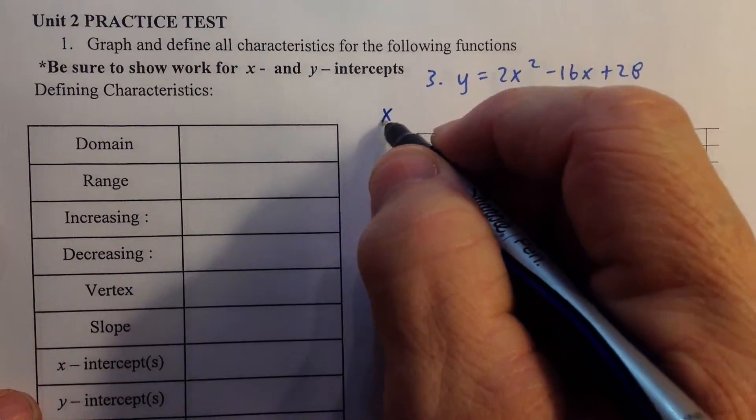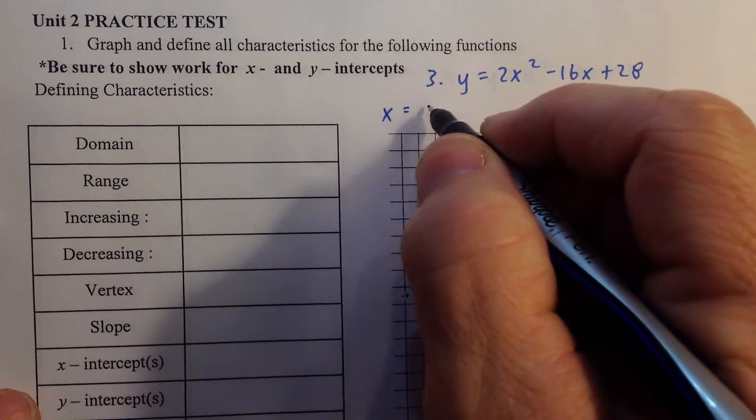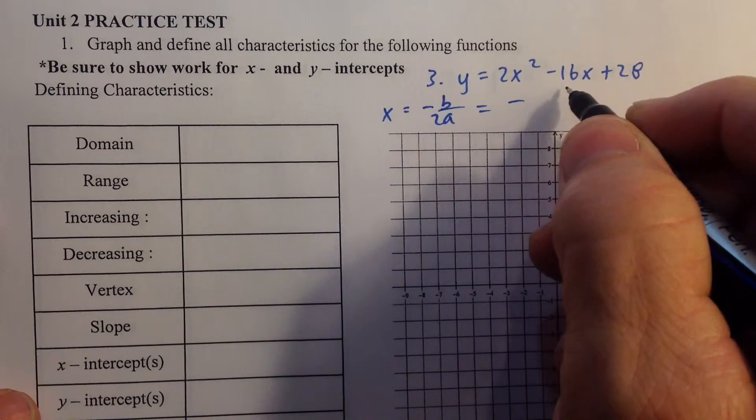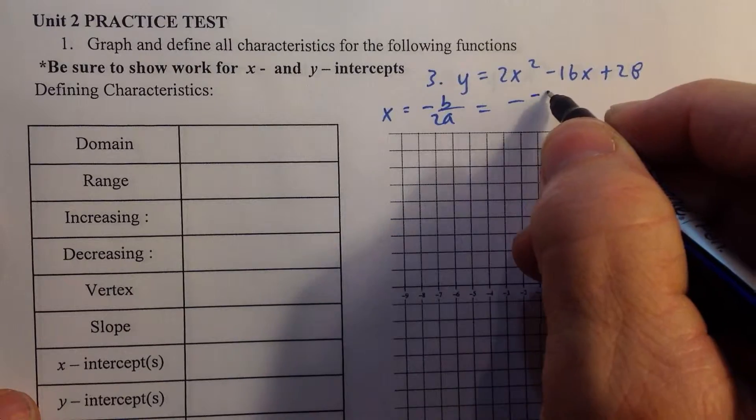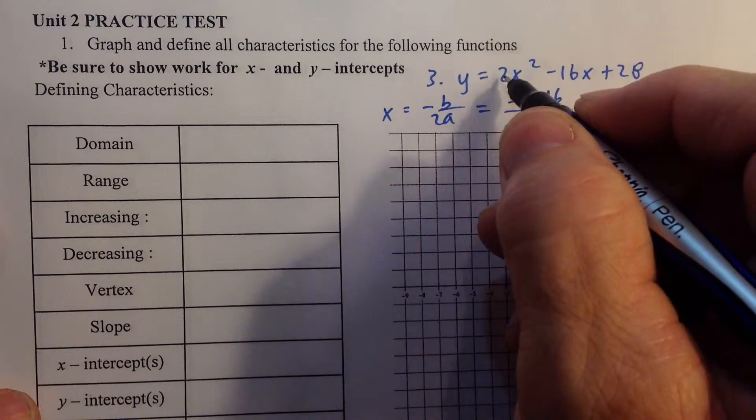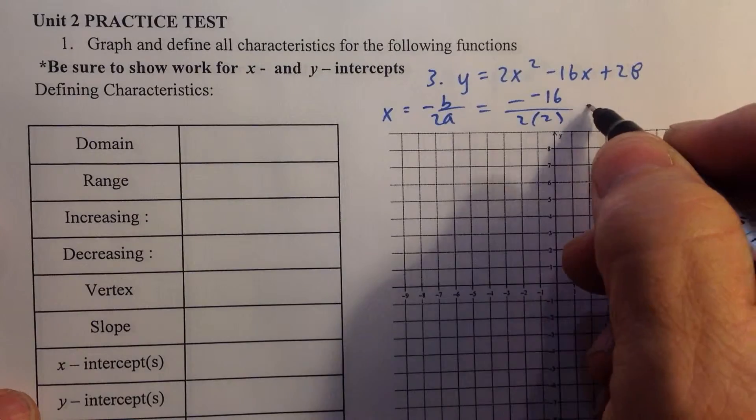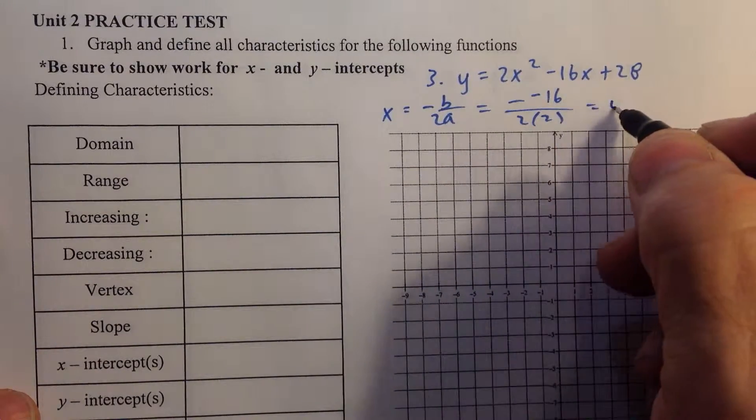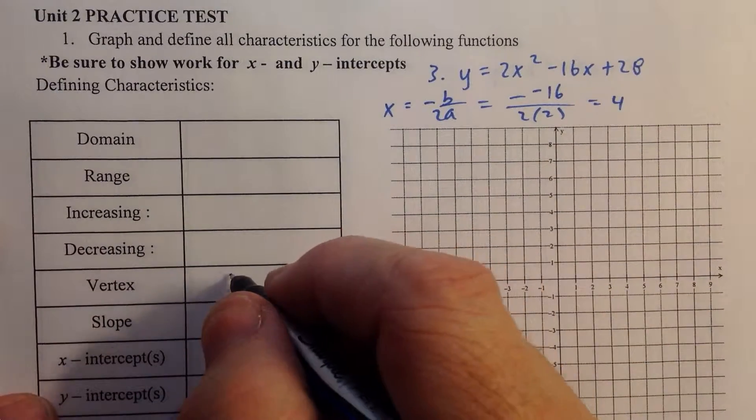We're going to first of all find the x-coordinate of the vertex. x equals negative b over 2a. b happens to be negative 16, so the opposite of negative 16 is negative b over 2 times a, which is 2. Negative negative is a positive. 16 divided by 4 is 4. That's the x-coordinate of the vertex.